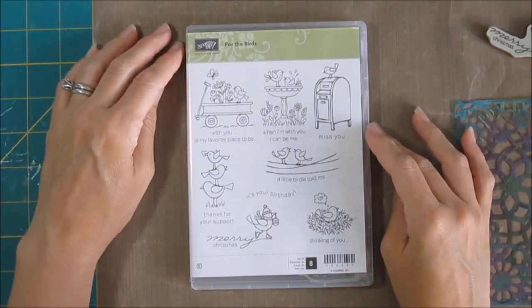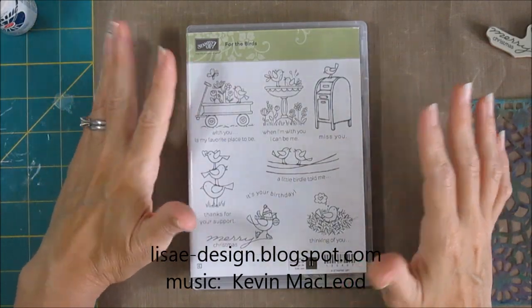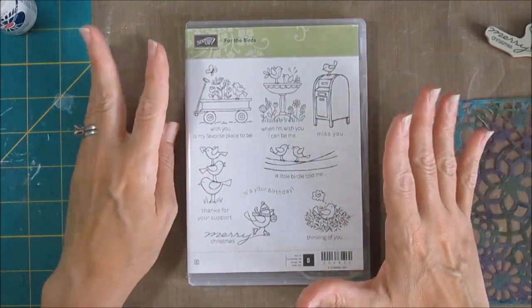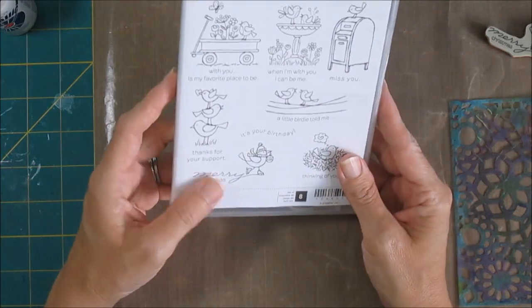Hi, it's Lisa continuing on with my crafty summer. I wanted to use some of the stamps that I haven't used as much as I could, so I opened up one of my drawers with stamps. The very first one out of the basket was this set called For the Birds from Stampin' Up.